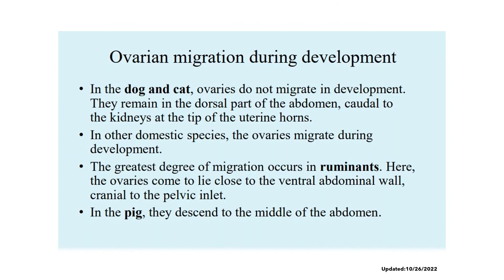In terms of ovarian migration during development, for the dog and the cat, the ovaries do not migrate and remain in the dorsal part of the abdomen, caudal to the kidneys, at the tip of the uterine horns. In other domestic species, the ovaries migrate during development. The greatest degree of migration occurs in ruminants, where the ovaries come to lie close to the ventral abdominal wall, cranial to the pelvic inlet. For the pig, they descend to the middle of the abdomen during development.